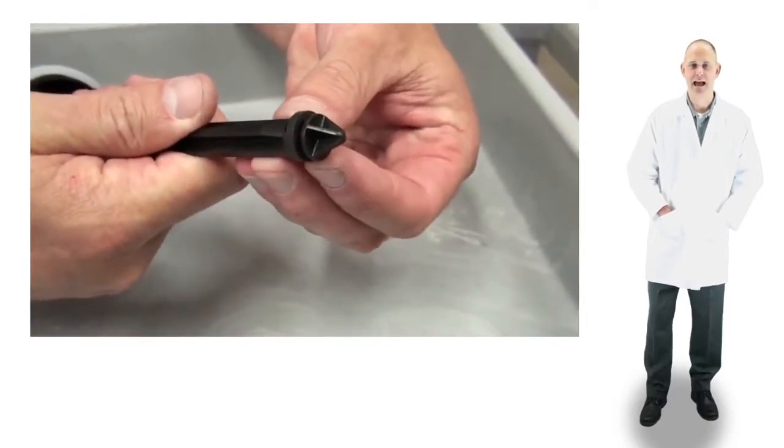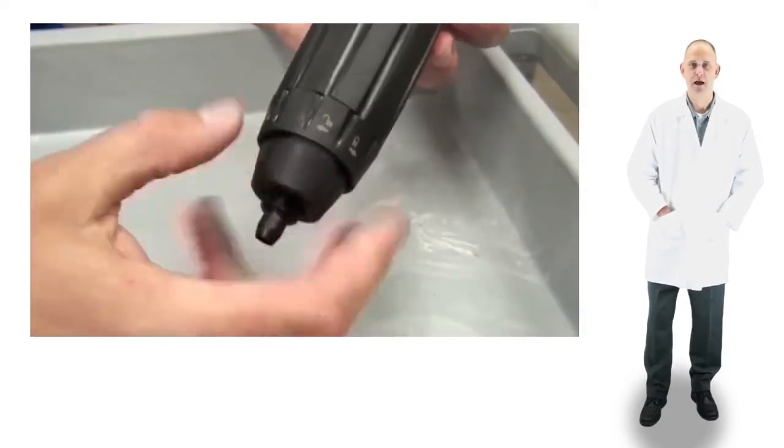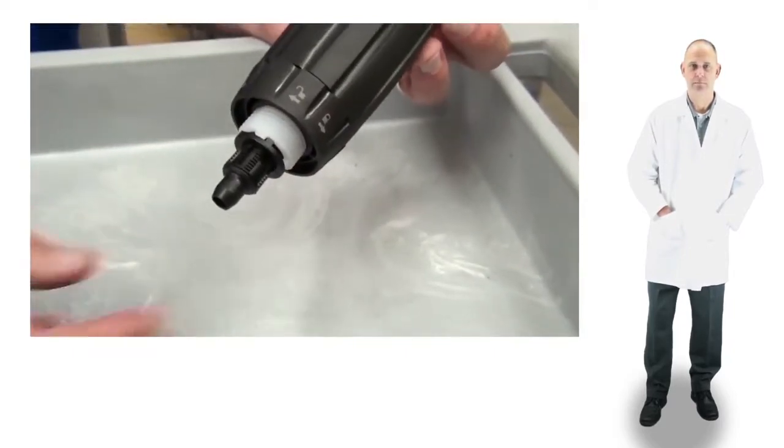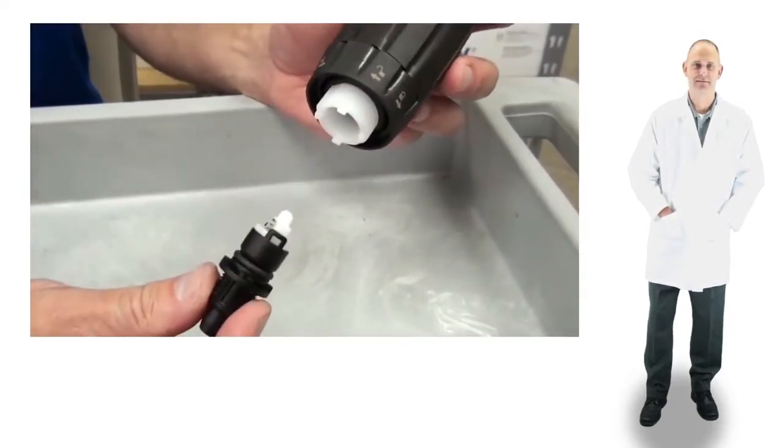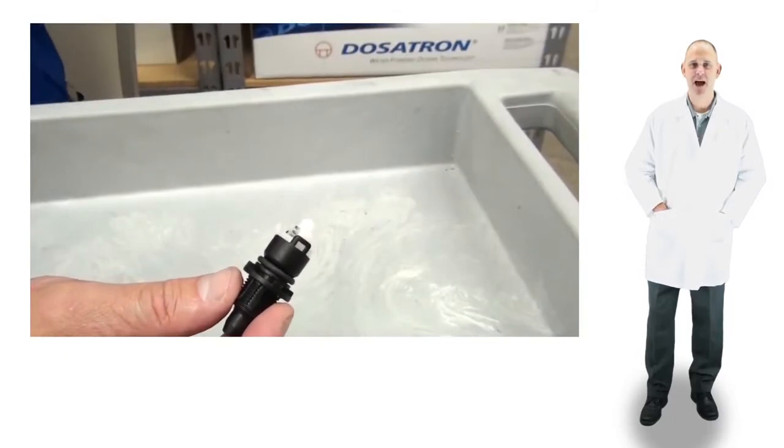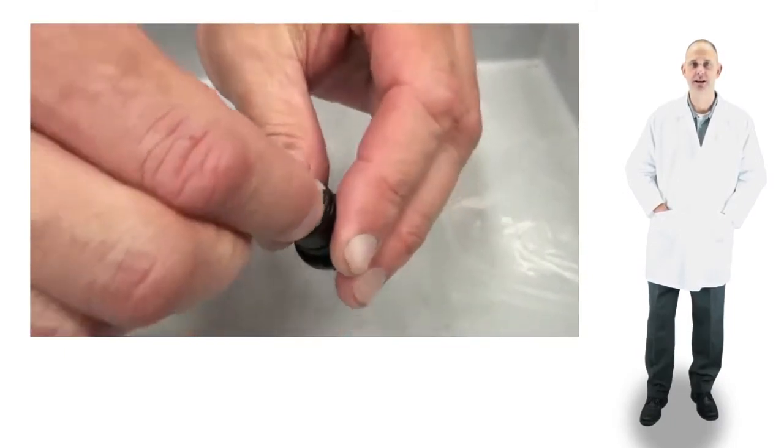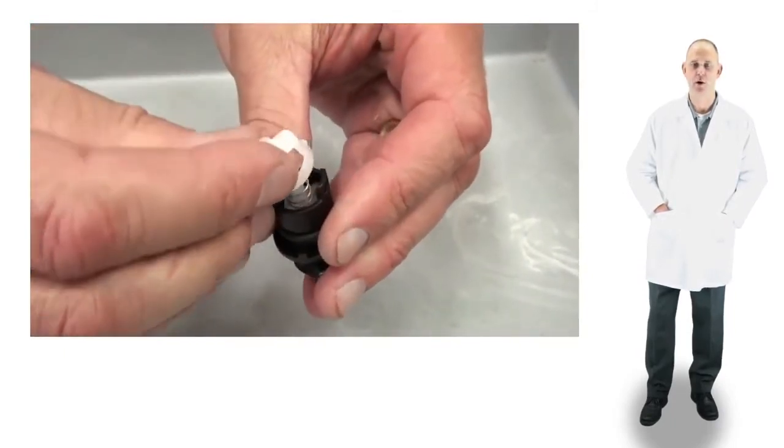Now, pick up the black stem, unscrew and remove the check valve nut, pull the check valve straight out. It may be a bit snug, but it will slide out. Set the stem aside and grasp the white retainer and twist it a quarter turn counterclockwise to release the check valve parts.